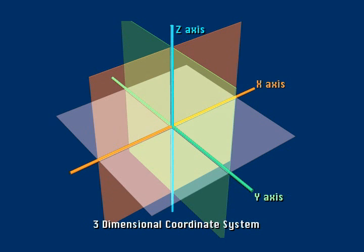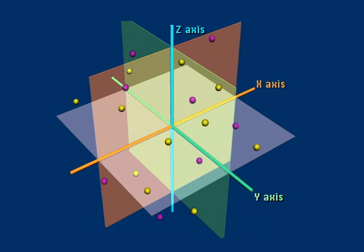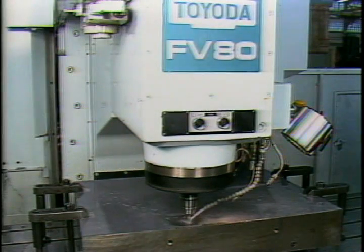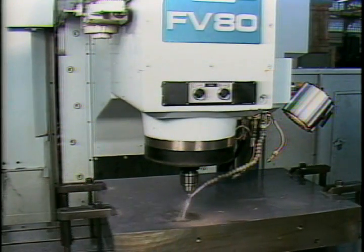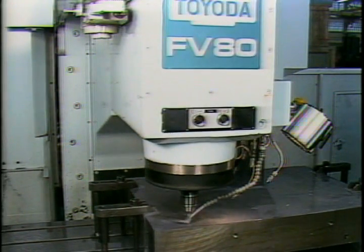This coordinate system is now extended into three dimensions. The three planes make it possible to locate any point out of the infinite number of points which theoretically exist. This three-dimensional coordinate system is the same coordinate system used on CNC machining centers.